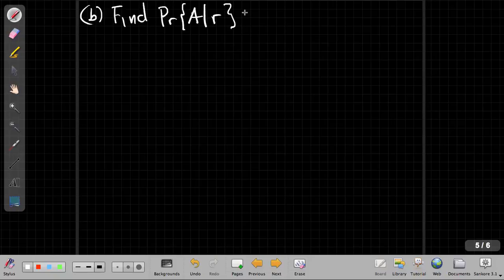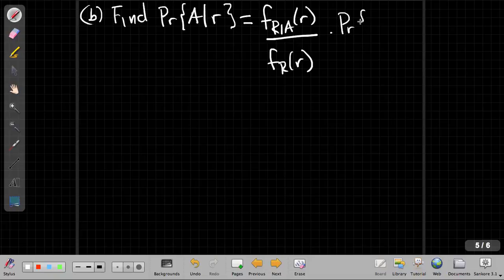Well, again, from the video we did a few minutes ago on the definition of conditional densities, we also showed that this expression here is the ratio of the conditional density to the overall density times the probability of A.